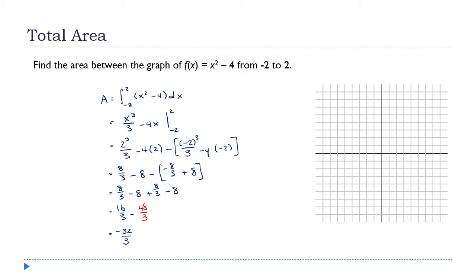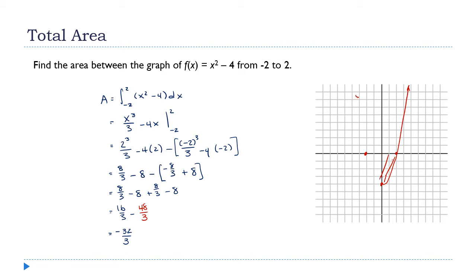We got a negative number — that's an issue. When we talk about area, areas are always positive. What happened? If you graph this function, it's a parabola opening upward with vertex at (0, -4). Its x-intercepts are at 2 and negative 2, so the graph dips below the x-axis. The area I was finding is entirely below the x-axis.